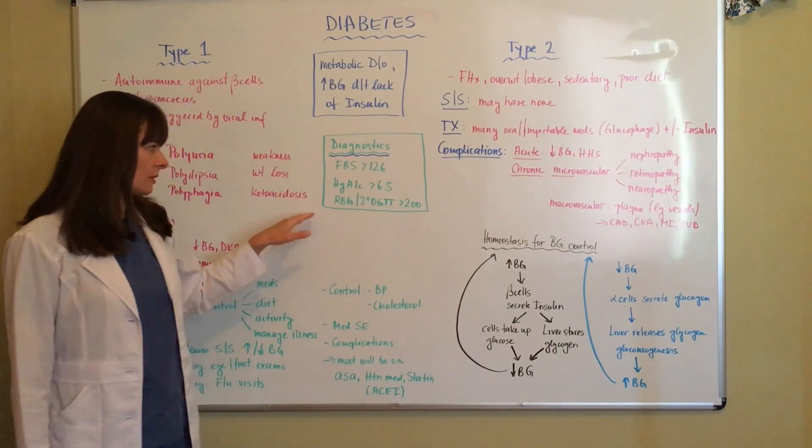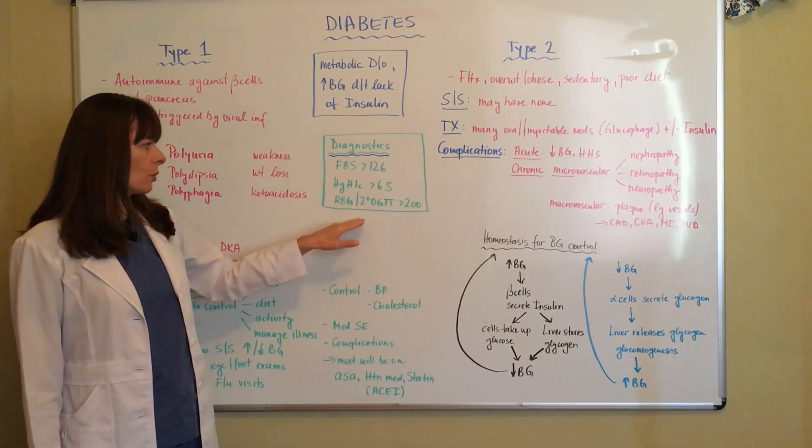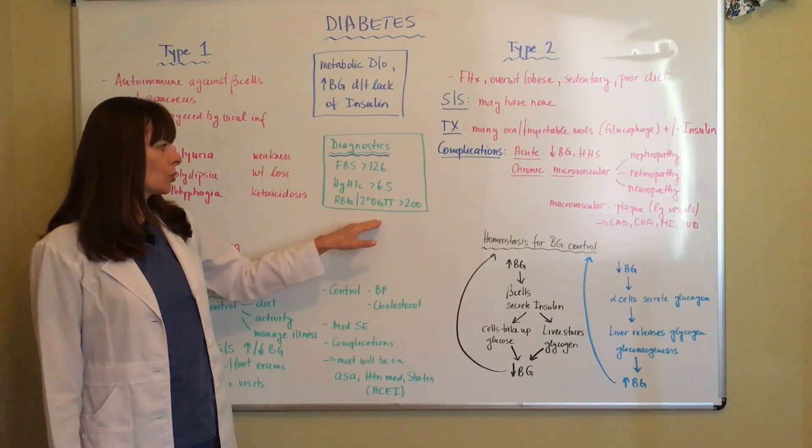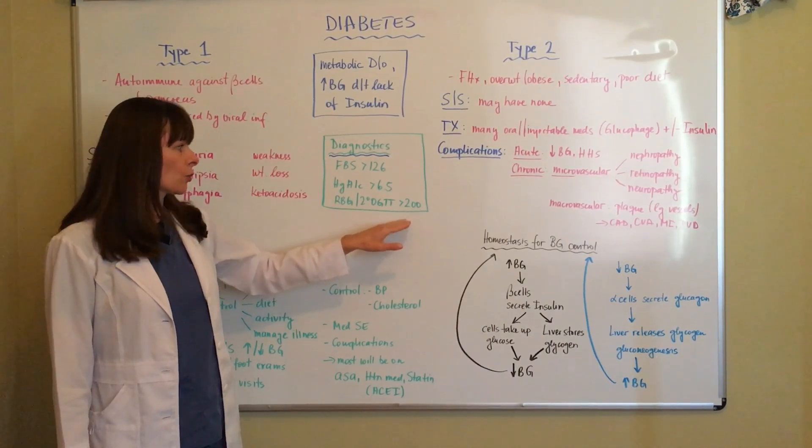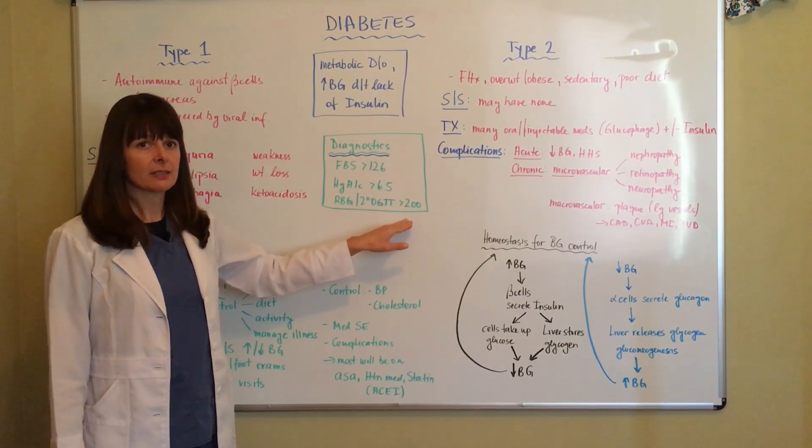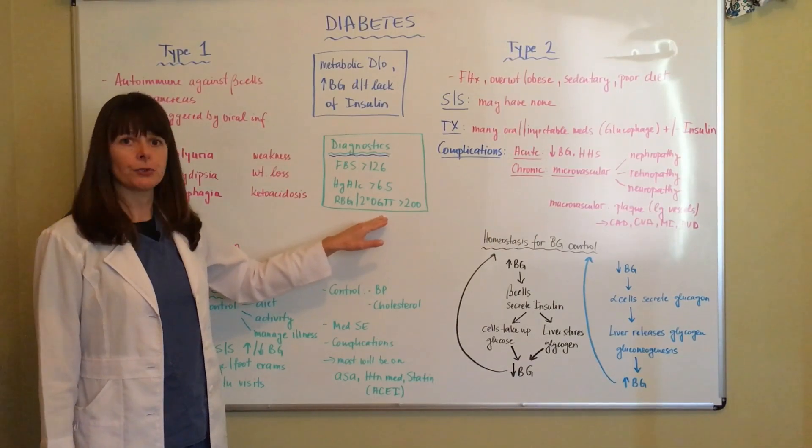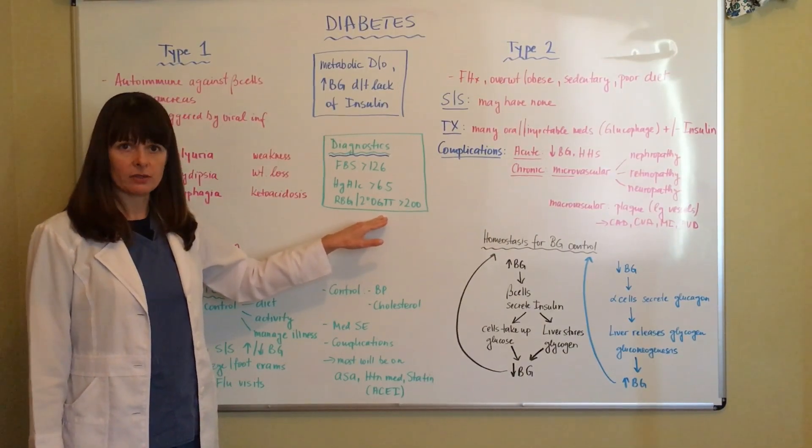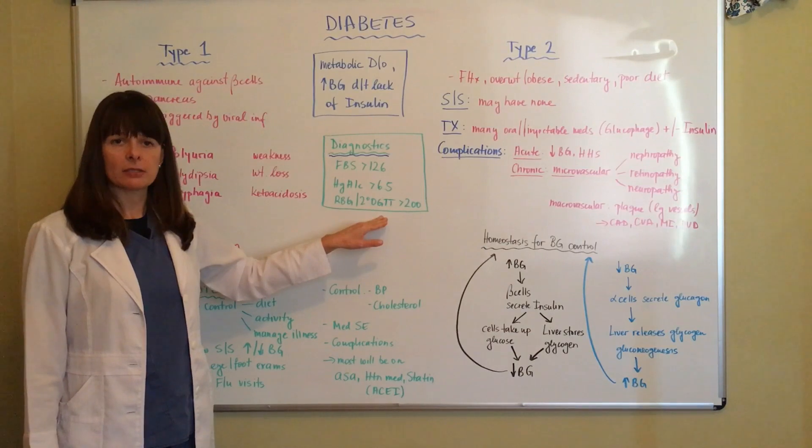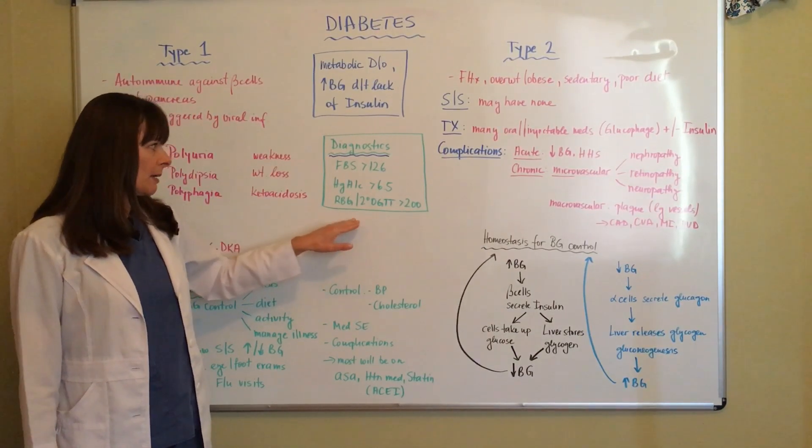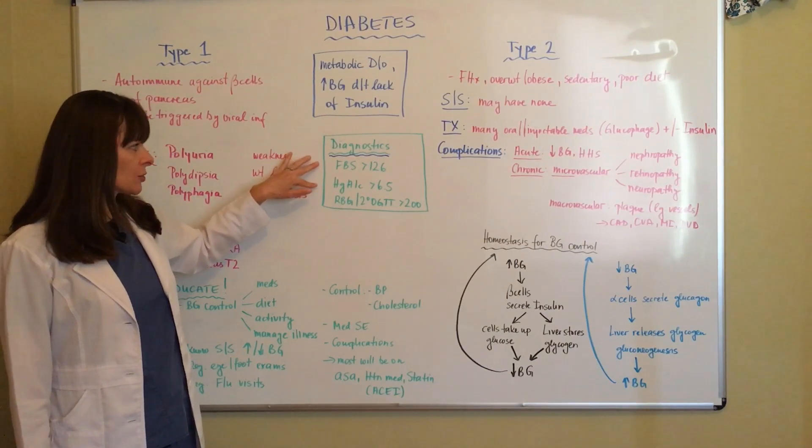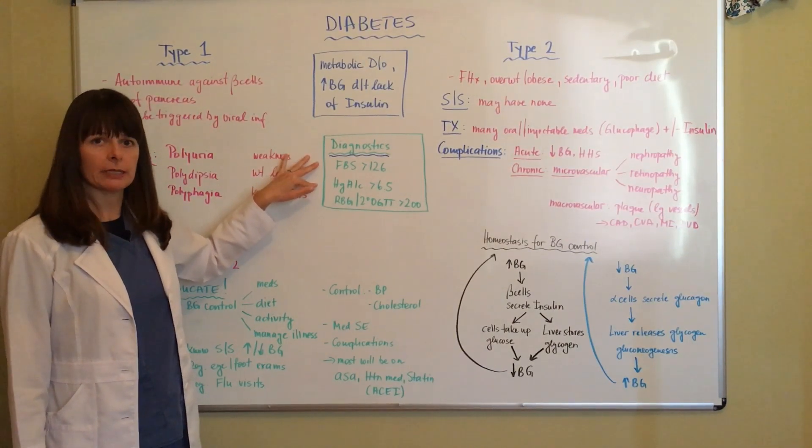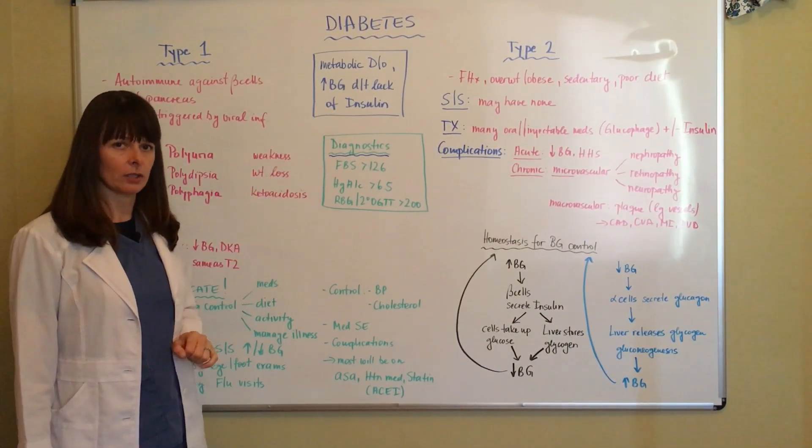The third option is a random blood glucose or a two-hour oral glucose tolerance test greater than 200. This is something they'll often use in the obstetrical setting if the mom is at risk for developing gestational diabetes. But for the most part, fasting blood sugar and hemoglobin A1c are typically the diagnostic tests that we use.